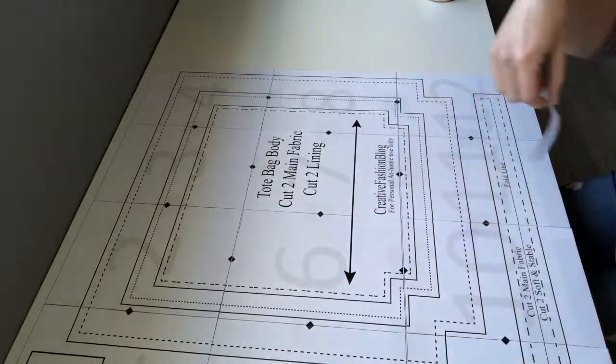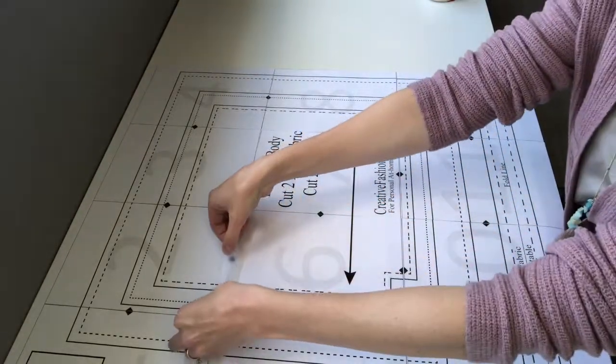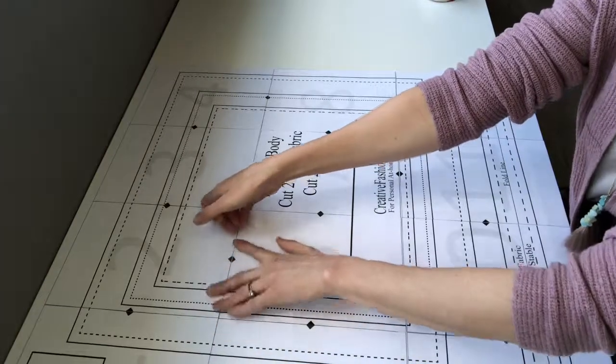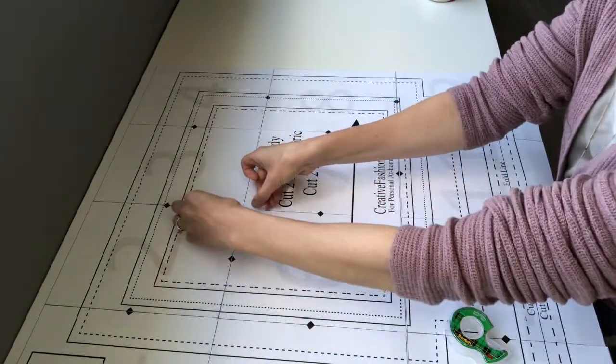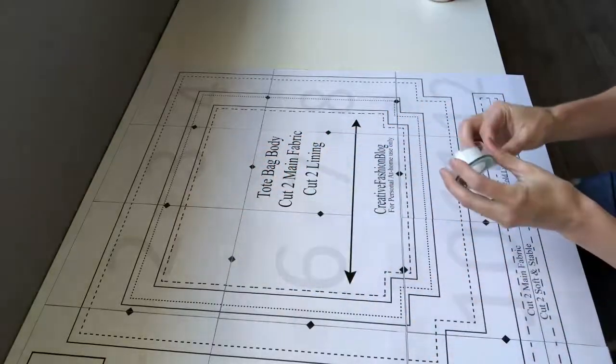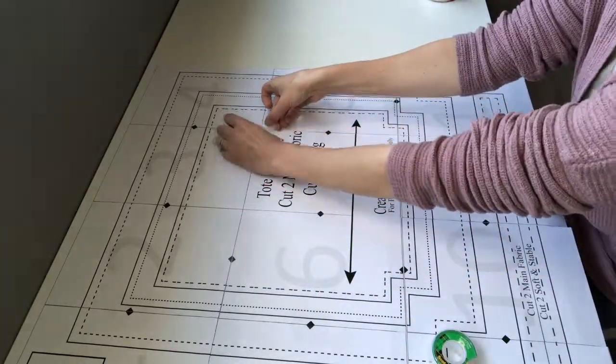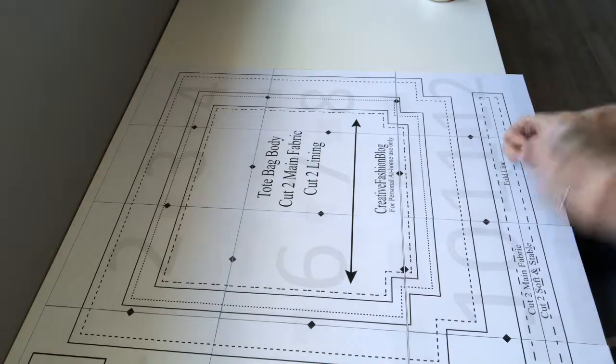Now that your pattern pages are in order, it's time to tape down the pattern itself in areas where it could come undone after it's cut out. I like to especially focus on page corners and any small pattern pieces that might be on a paper seam.